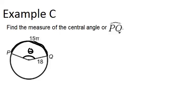So what we should do first is figure out what the full circumference of the whole circle would be, in order to figure out what fraction of the full circumference is 15π, because that will help us define the angle.